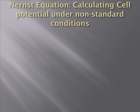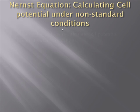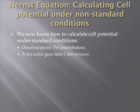To understand the calculation of cell potential under non-standard conditions, we have to review a little bit about what is meant by standard conditions. We have learned how to calculate cell potential under standard conditions — you can just look up standard cell potentials for the different reduction and oxidation half-reactions. Under standard conditions, dissolved species will have one mole per liter concentrations, and if there are gases involved in the redox process, those gases have to have one atmosphere pressure.